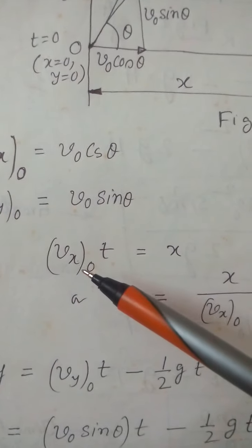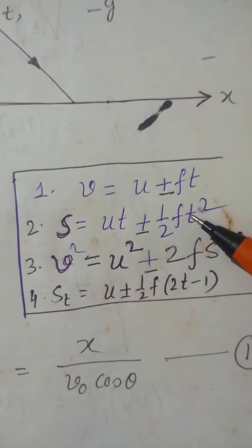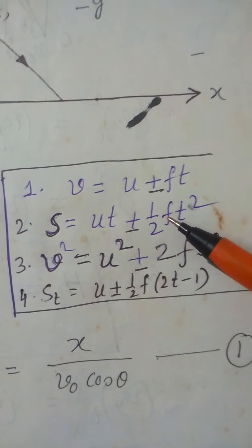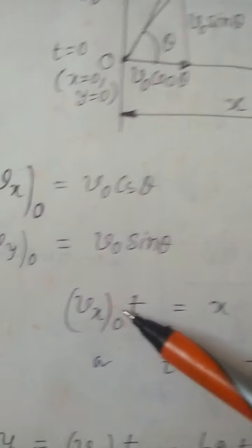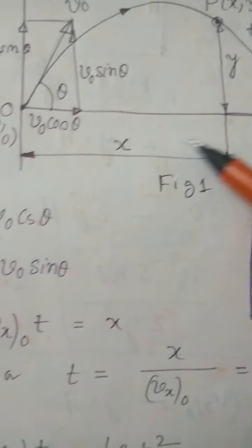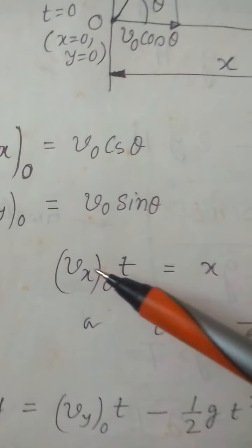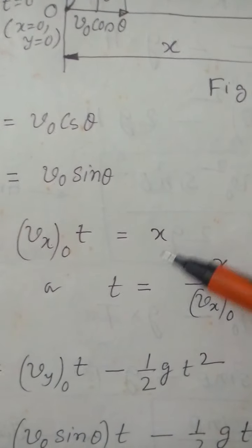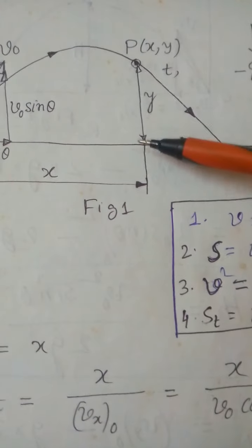Using s = ut: in the horizontal direction there is no acceleration, since gravity acts only vertically downward, so f equals zero. Therefore x = vx0 · t, which gives t = x / (v0 cos theta). This is equation number one — we have found t in terms of x.